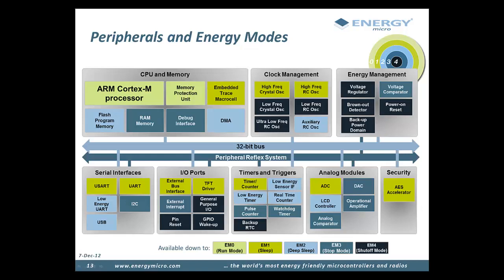Here is an overview of the EFM32. A similar figure can be found in the reference manual for each device family. On this slide, you will note that all of the peripherals are color-coded with a corresponding energy mode, indicating the lowest possible energy mode where the peripheral can still be active. As an example, the UART module is available in energy mode 0 and 1 because it needs the high-frequency clock to operate. However, if the application can get away with a slower UART connection, the low-energy UART can be used. The low-energy UART allows baud rates up to 9600 and only uses the low-frequency clock, so it can be used down to energy mode 2.